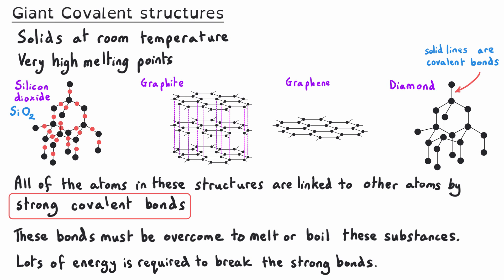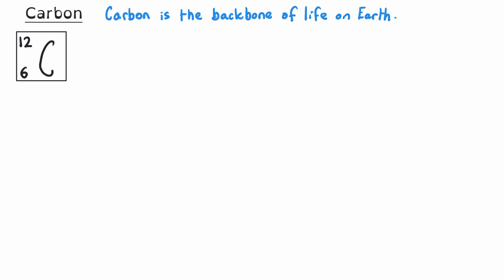As well as being able to explain the very high melting point of giant covalent structures, you need to be able to recognize them from diagrams showing their structure and bonding. Carbon is the backbone of life on Earth, forming the basis of all essential biomolecules. Its unique ability to form stable bonds with many elements, including itself, allows for the diversity of organic compounds.